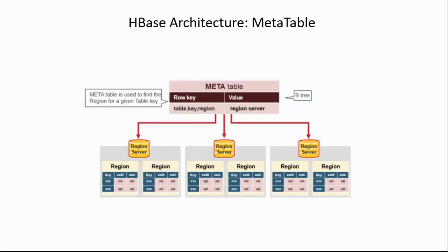There is also a meta table that stores a map between the table name, the key ranges (start and end keys), the region, and which region server holds that data. So if you want to query a table from row 100 to row 200, the meta table tells you, for example, that rows 50 to 150 are in one region server and rows 150 to 250 are in another, and you have to put together the data.